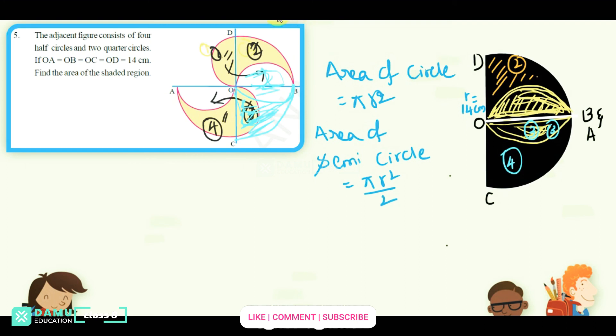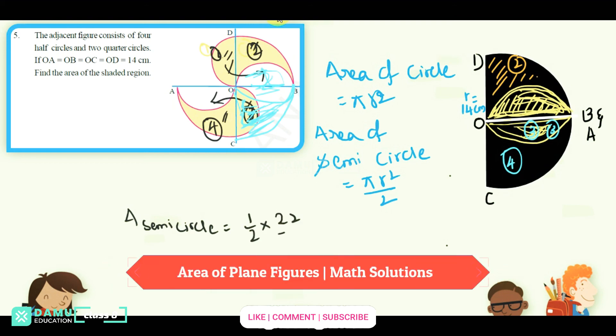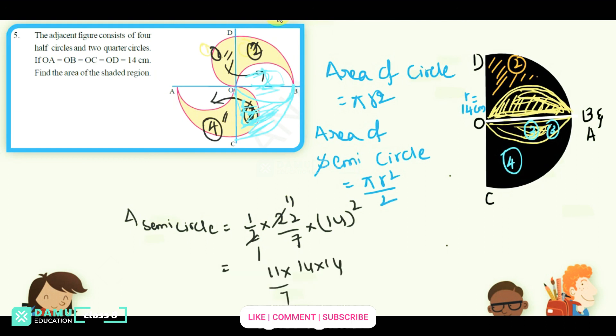Area of semicircle will be equal to πR²/2. What is that R? So, let's find area of semicircle. That will be equal to 1/2 × 22/7 × R is 14 squared.